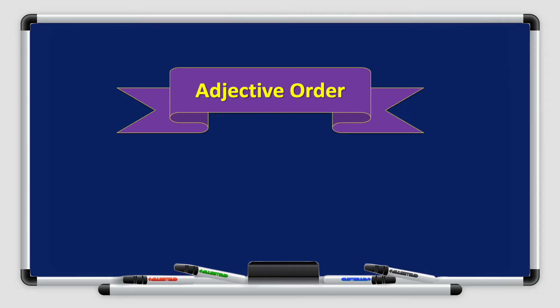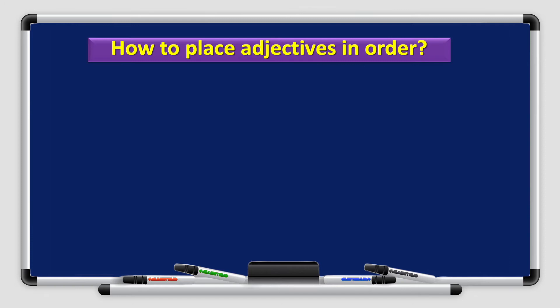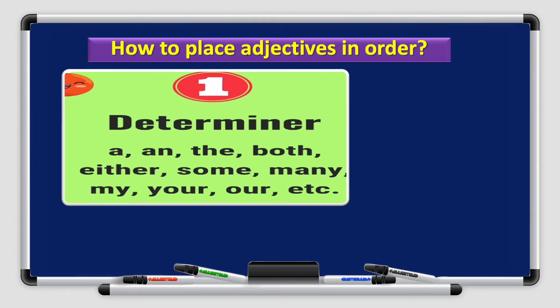Moving on to the second part of today's episode, which is the adjective order. Now, when you want to write a sentence that has adjectives, you want to describe your noun here. And you want to use more than one or two adjectives. There is an order that you need to follow. There's an order of adjectives that you need to follow.